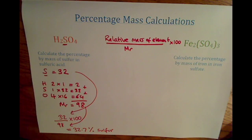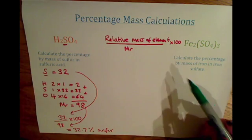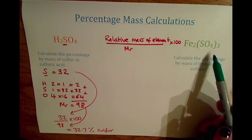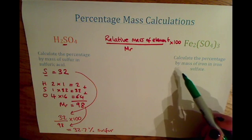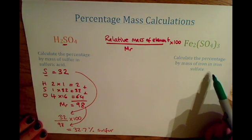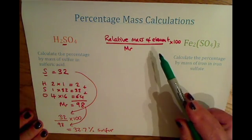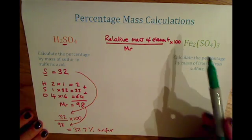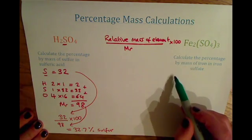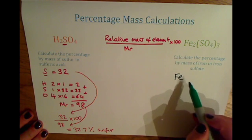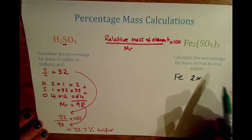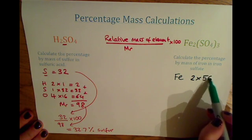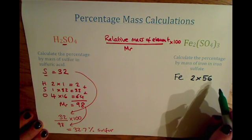In another example, we've got iron sulfate, which is Fe₂(SO₄)₃. We need to calculate the percentage by mass of iron in iron sulfate. For the first part, we need to know the relative mass of iron in this compound. There are two Fe atoms, so we need two times the relative atomic mass of iron, which is 56, giving 112.